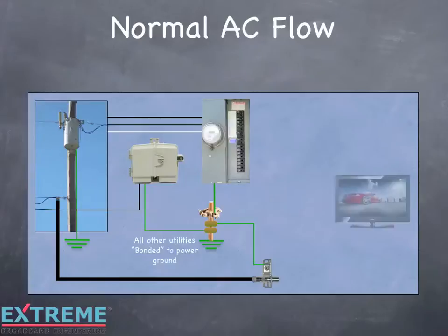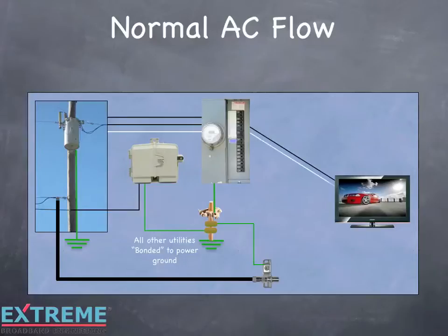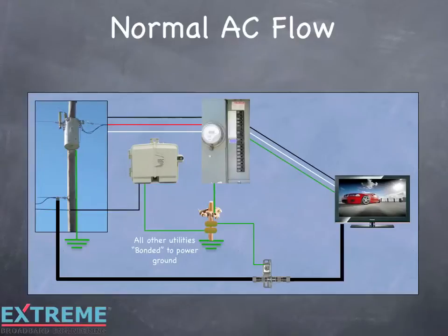In this example, we are showing one circuit that is run to the TV. From the circuit breaker there are three electrical wires run: a black which is hot, a white which is neutral, and a green which is ground. From the cable ground block, the cables run to the TV. Through the TV tuner, the power ground and cable shield again come in contact with each other. The normal AC flow goes from the hot leg of the transformer, through the power meter and circuit breaker panel, through the hot or black wire to the TV set. It then travels back through the neutral or white wire, through the circuit breaker panel and power meter, through the neutral, back to the transformer.